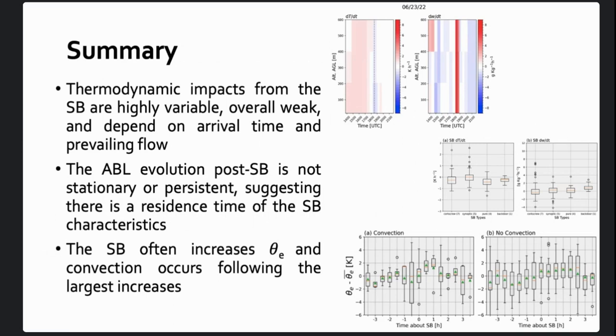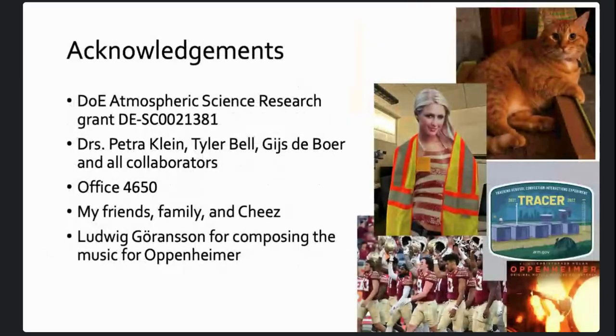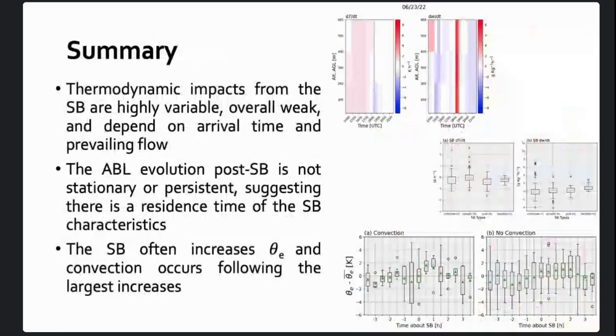And with that, I will throw up my summary slides. Essentially, the thermodynamic impacts of the sea breeze are far more variable than I ever expected and are dependent on your time of day, the time that the sea breeze passes through, influences from the bay breeze, and your prevailing flow, which was well known, but not documented in this sort of way. And the sea breeze often increases theta E, which was a little bit counterintuitive. You expect it to cool a little bit more than it would moisten, therefore reducing your convective potential. But because they're kind of offset, you do see this increase. And with that, I will acknowledge the usual suspects of my funding agency, my advisors, my office, friends, family, and cheese, and the things that got me through this semester, including Ludwig, Bronson, and FSU football. And here's my summary. I'll take any questions.